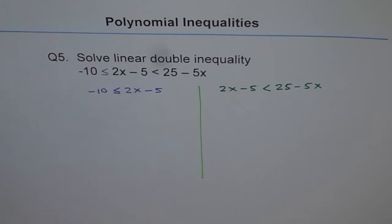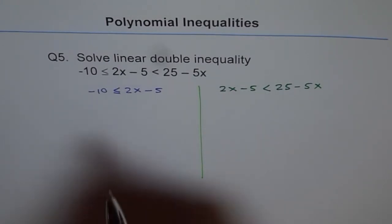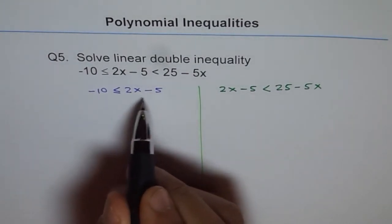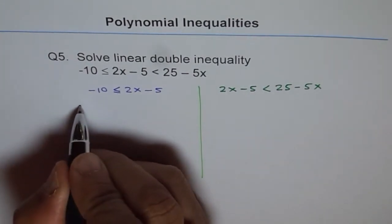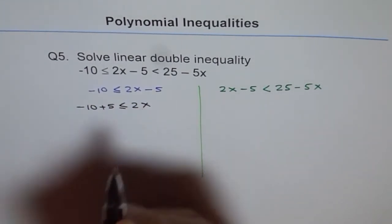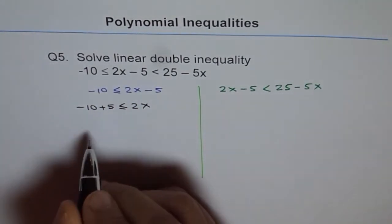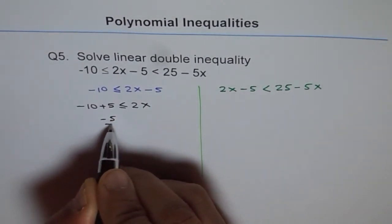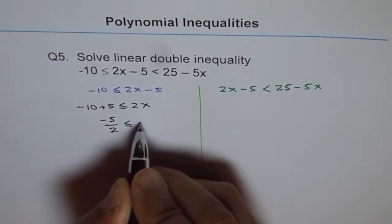And after solving, we will take a common solution. So when we solve this, we can add 5 to both sides. In doing so, we get minus 10 plus 5 is less than equal to 2x. So minus 10 plus 5 is minus 5. And we can divide by 2 to get x is greater than equal to minus 5 over 2.